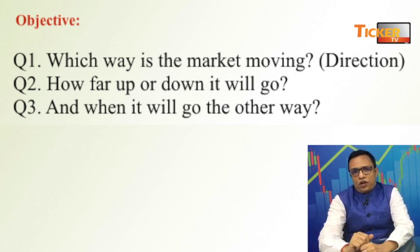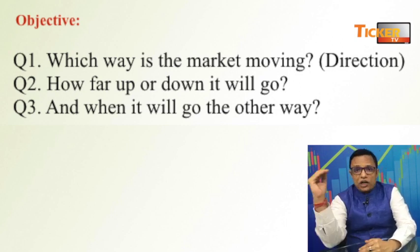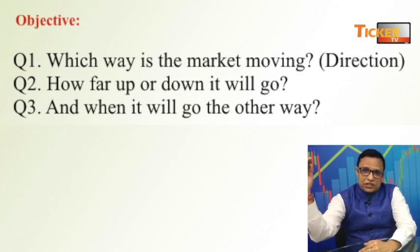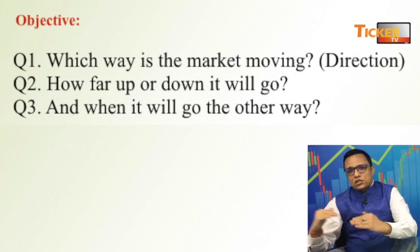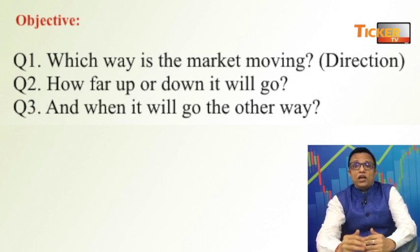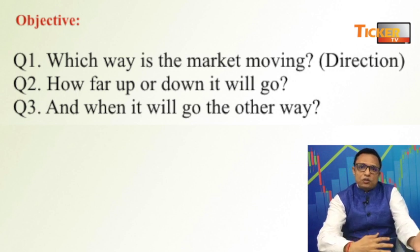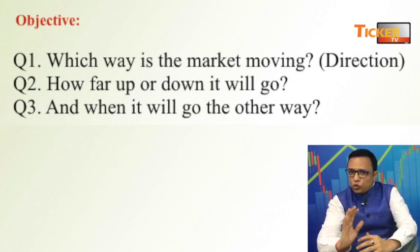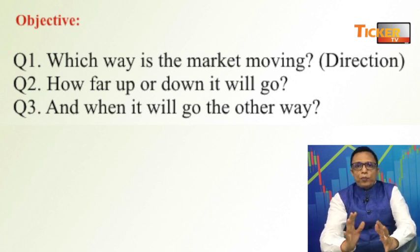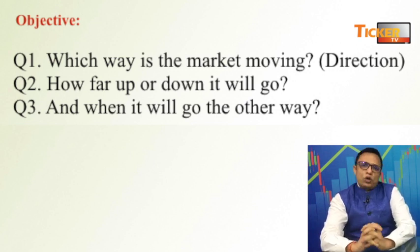Doosera objective kya hai? How far up or down will it go? Means, kitna upar jaane tak iska resistance hai, aur kitne niche aane par iska support hai. Aur teesra objective hai — when will it go the other way? Means, change in direction. Yeh tino cheezein charts humko bata dete hain. That means technical analysis ka objective humara poora hota hai.